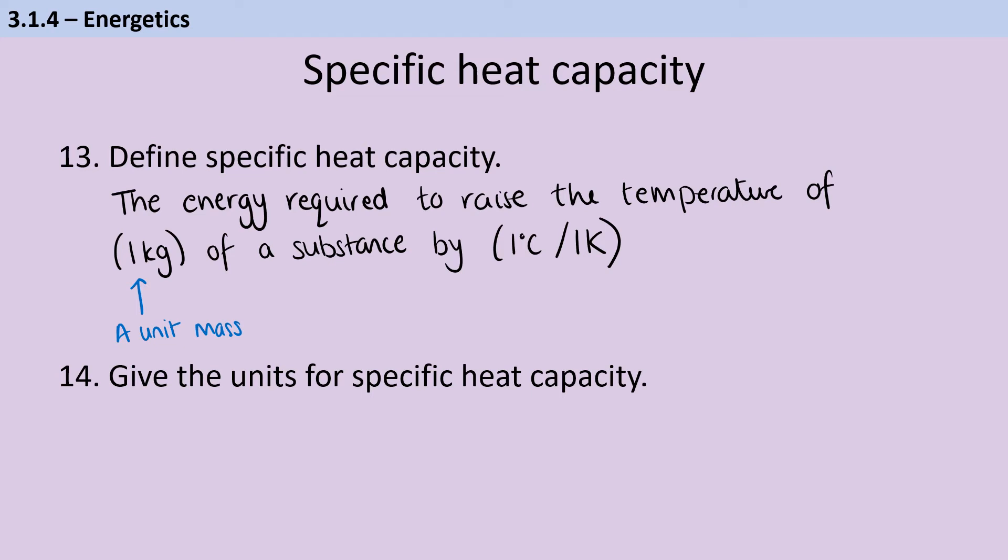The units for specific heat capacity are going to be joules per kilogram per Kelvin. Or as we say, you could do it in terms of a gram of the substance, in which case it will be joules per gram per Kelvin.